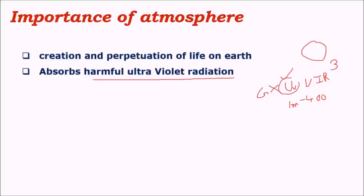This radiation received from the sun is harmful because it can cause skin cancers, skin burns, DNA mutations, and various other harmful phenomena for life forms on earth. It is therefore important that this radiation is blocked, and this blocking is done by O3 or ozone molecules present in the stratosphere of earth's atmosphere.